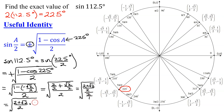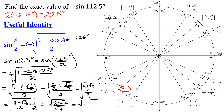The reciprocal of 2 over 1 is 1 half. So now I get 2 plus the square root of 2, times 1, which is just 2 plus the square root of 2, all divided by 2 times 2, which is 4. And finally, our answer is the square root of 2 plus the square root of 2, all divided by the square root of 4, which is 2. So that is the exact answer for the sine of 112.5 degrees.